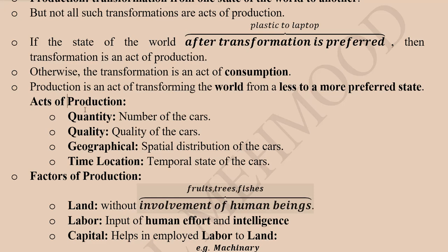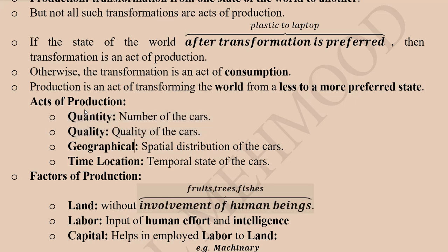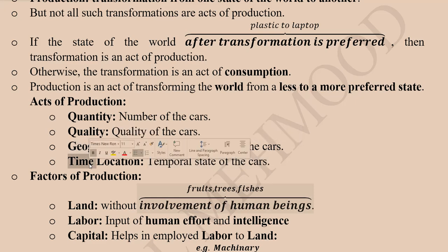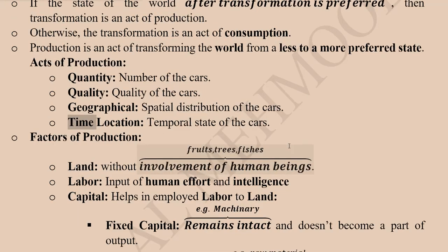The acts of production can take more than one form. We can focus on the quantity of something — such as the number of cars produced — or the quality of the cars produced. When we change the location of a commodity, that is also an act of production because spatial distribution changes and can generate revenue. Time also matters: storing a commodity and selling it when prices are high exploits the temporal dimension of production.